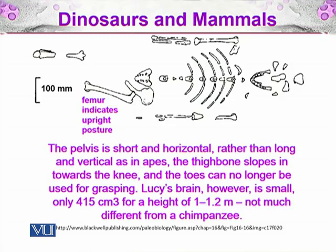Lucy's brain, however, was small — only 415 cm³ for her height of 1 to 1.2 meters — not much different from a chimpanzee. So her brain and overall posture were like a chimpanzee's, but she was already walking on two feet.